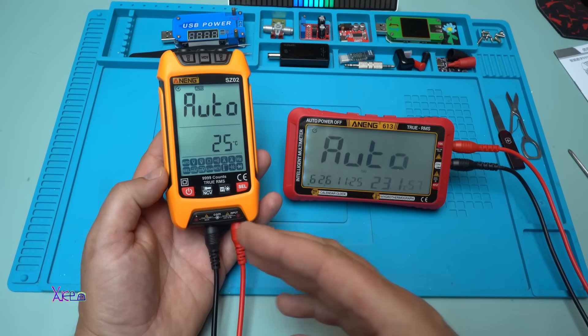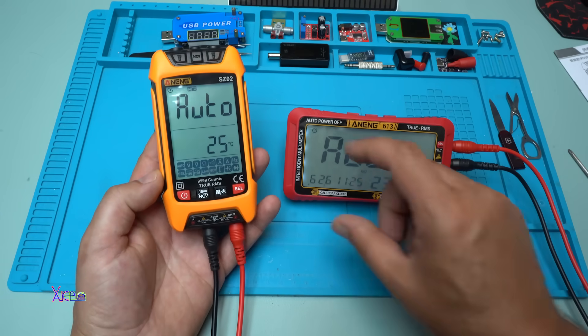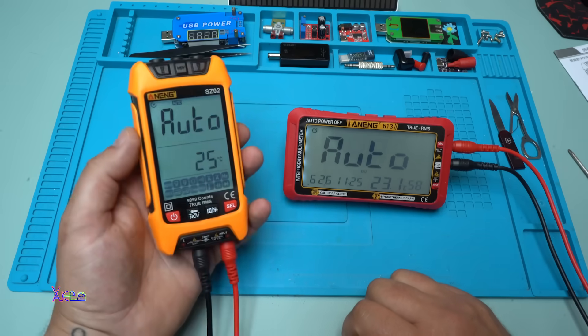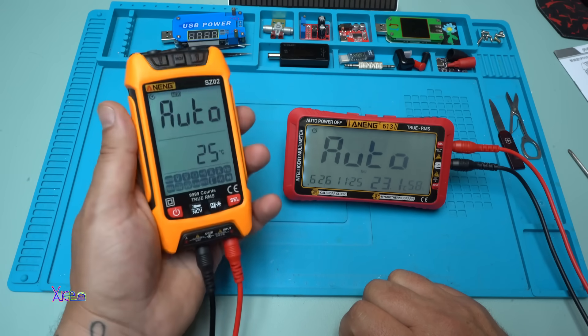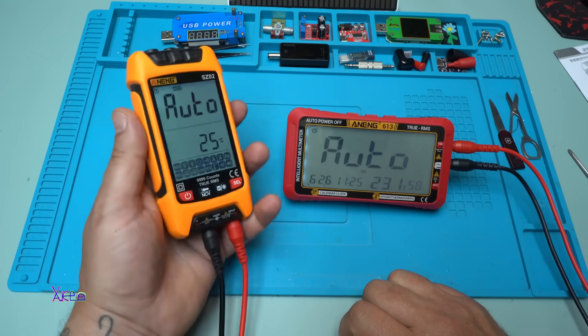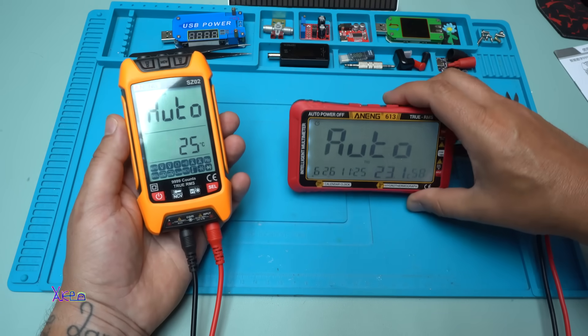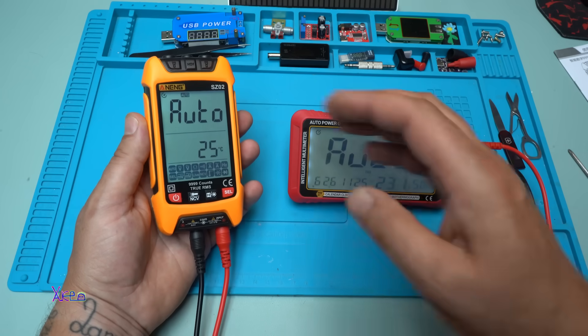And here it is next to the Aneng 613, which is horizontal screen. This one is vertical. It's much smaller in size. And this multimeter is more like for using on the field. But this one with the holder is for my desk.